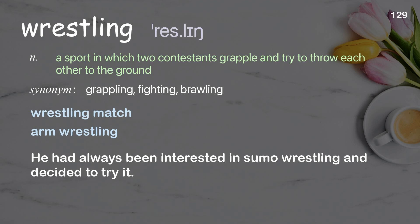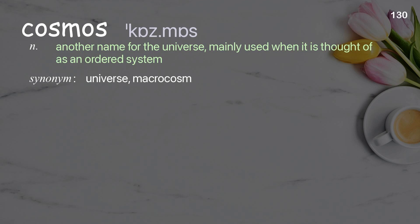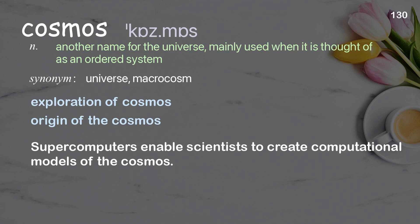Cosmos: another name for the universe, mainly used when it is thought of as an ordered system. Examples: exploration of cosmos, origin of the cosmos. Supercomputers enable scientists to create computational models of the cosmos.